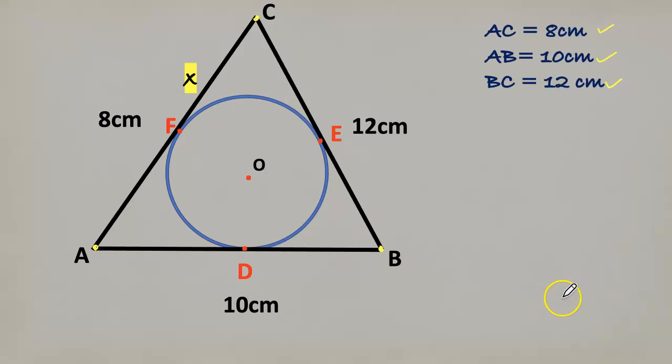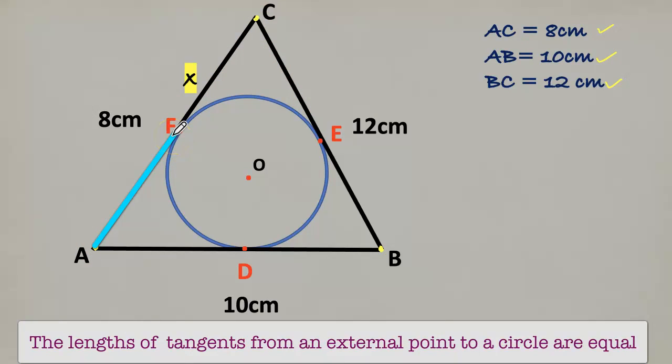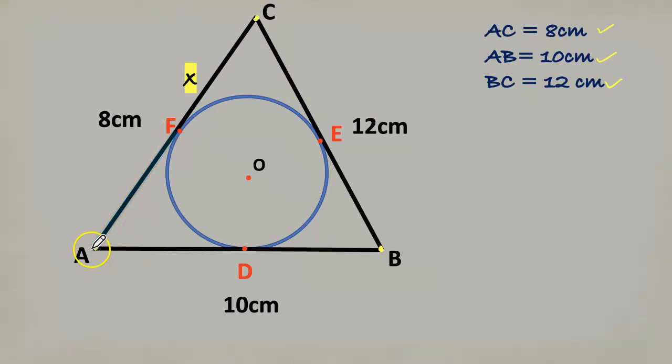Let's put CF as X, then CE also X. The length from A to C is 8 cm, then AF will be 8 minus X. So AF is 8 minus X, then AD is also 8 minus X.